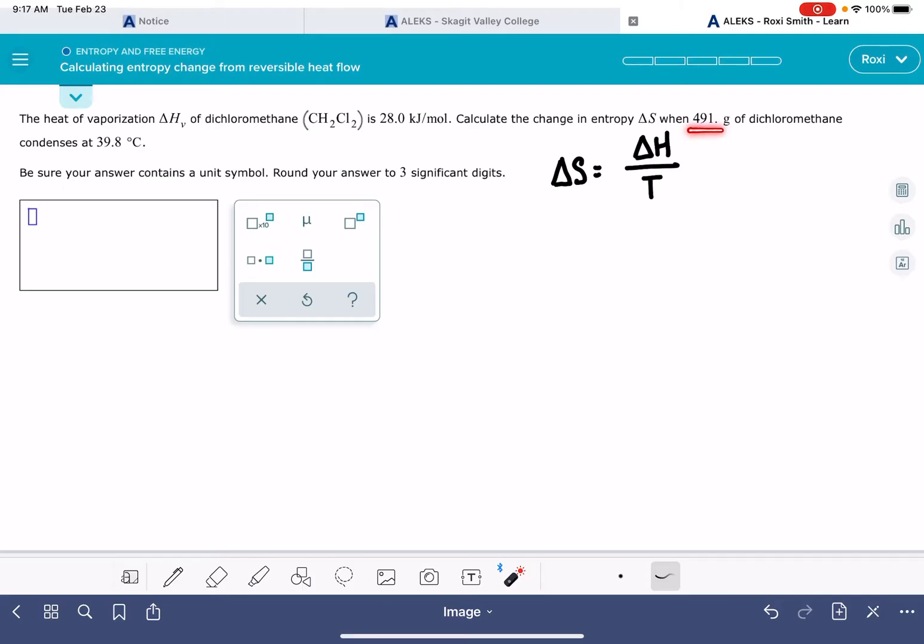It's also telling us that we have 491 grams of our substance. So we have to figure out how many moles of this we have so that we can figure out exactly what our delta H value is. We don't want it in units of kilojoules per mole. So the first thing that I'm going to do is take this 491 grams of dichloromethane CH2Cl2, and I'm going to convert that number into moles using the molecular weight of the dichloromethane.